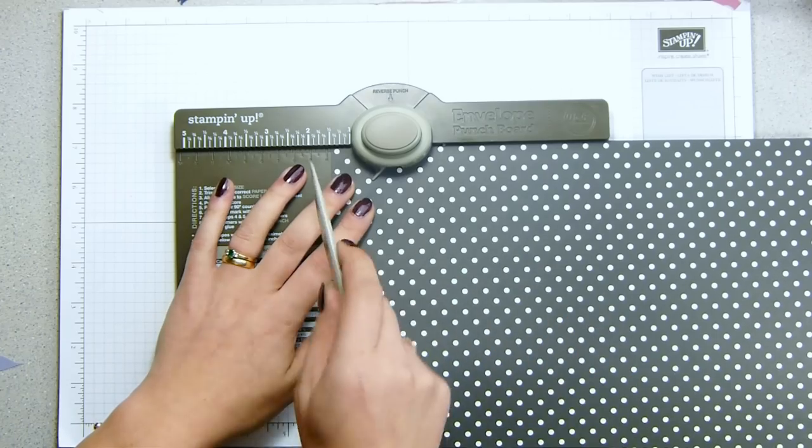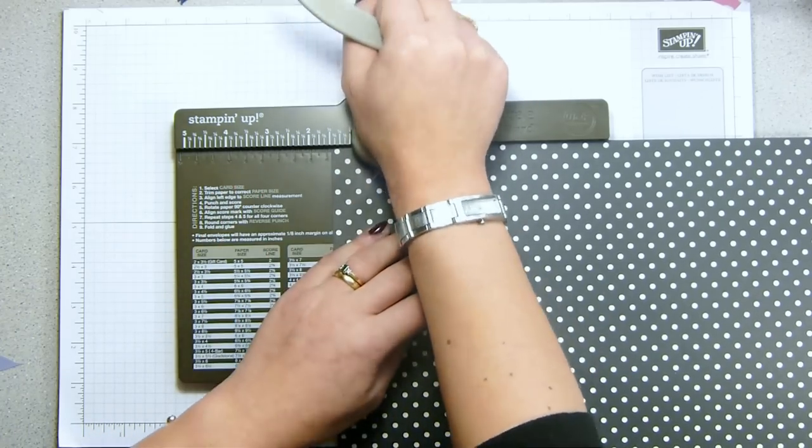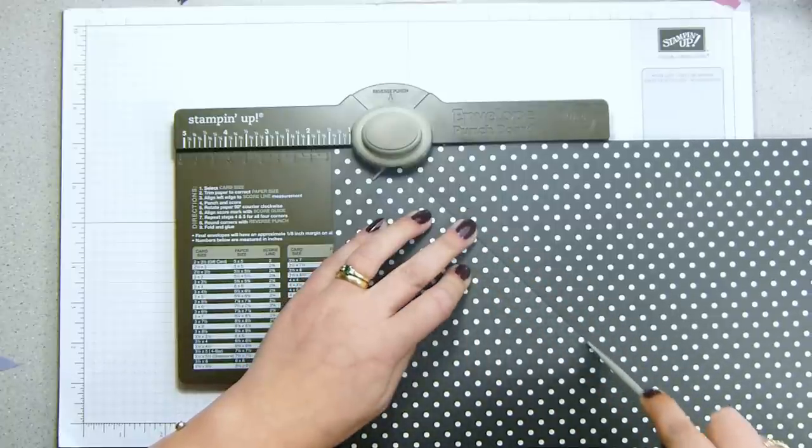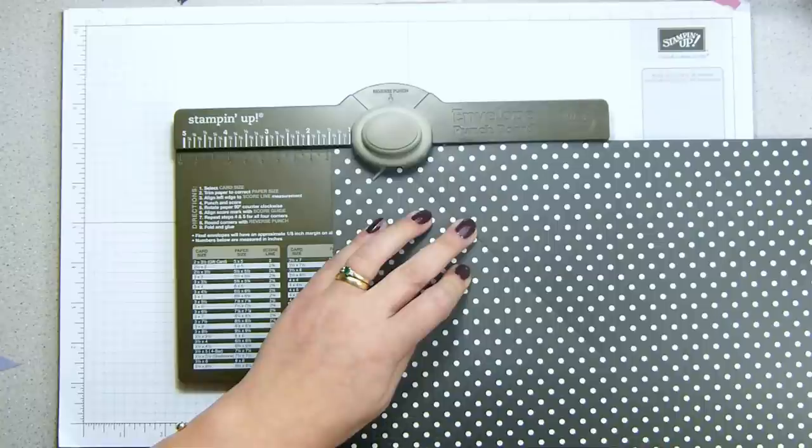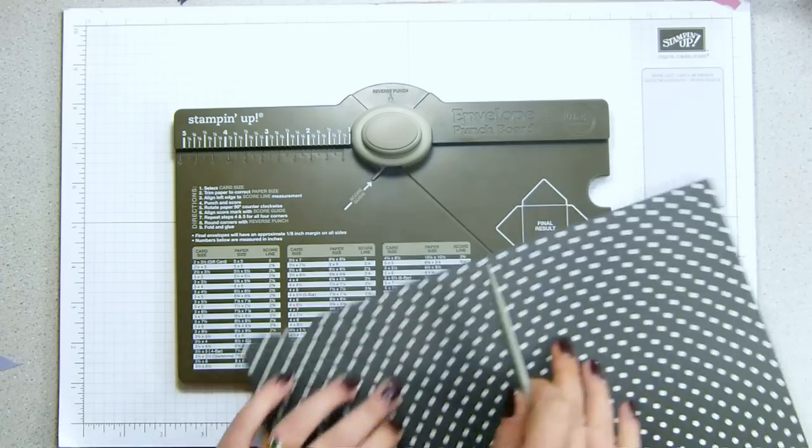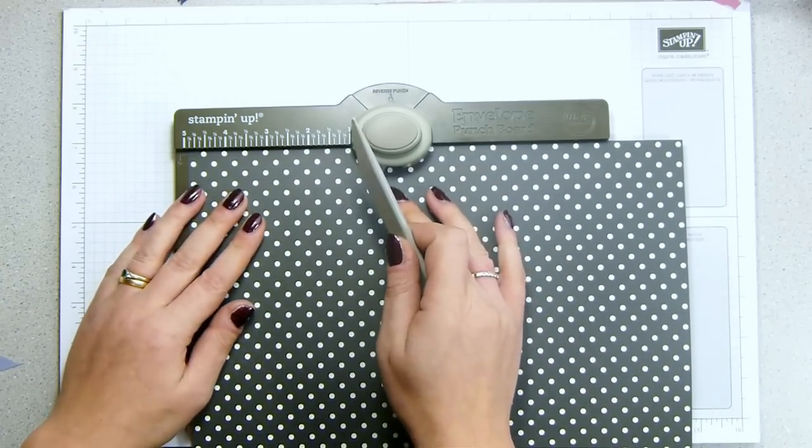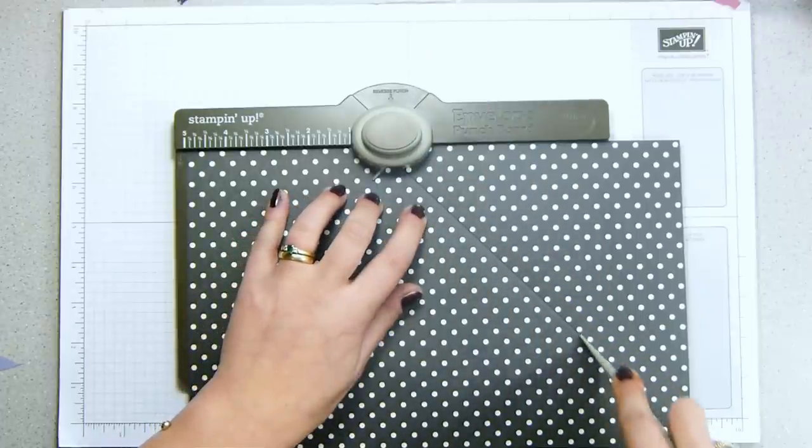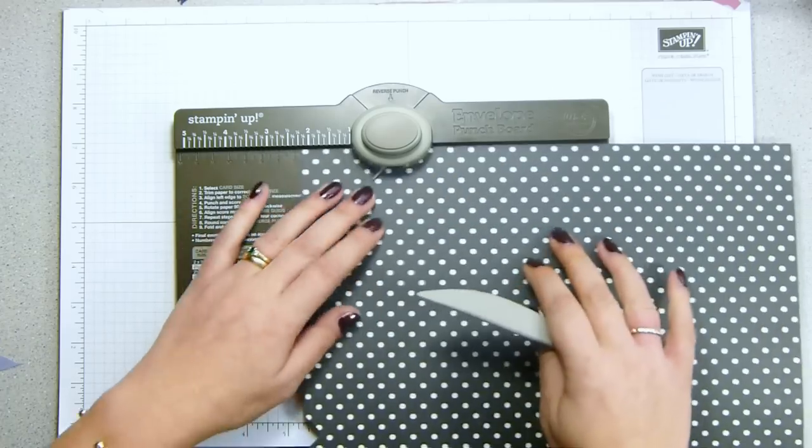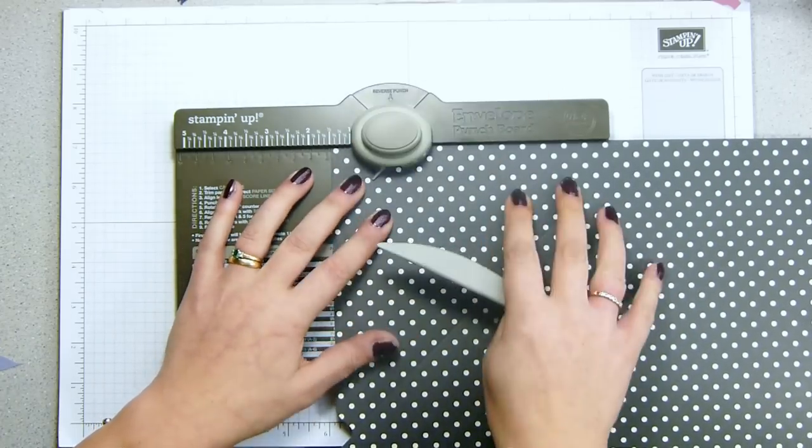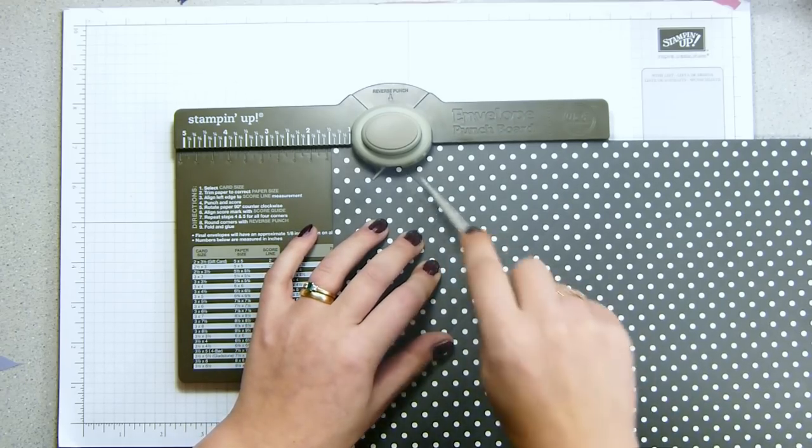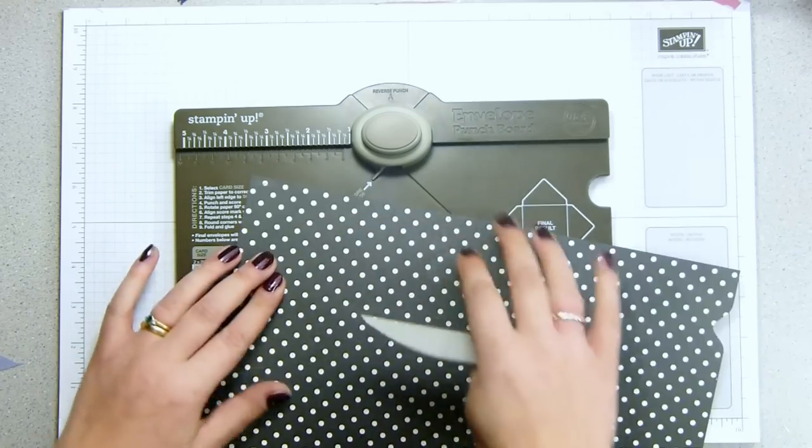Your first score line comes at one and a half, so you punch and you score down. Now you are going to go off the edge of the paper. Don't go too far because you risk buckling it and sticking a hole in it. Then you rotate your cardstock and set it at five inches. Again, punch and score down, then come back to one and a half, punch and score down.